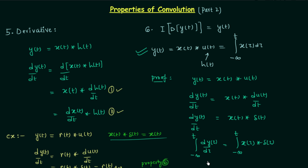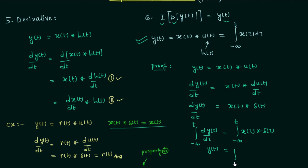So on the left hand side we will have y(t) itself, because we are performing the derivative and then the integration. When you perform the integration of the derivative of a signal you get the signal itself. So integrating both sides from minus infinity to t, the left side gives y(t), and the right side gives integration from minus infinity to t of x(τ) dτ. This proves property number 6.